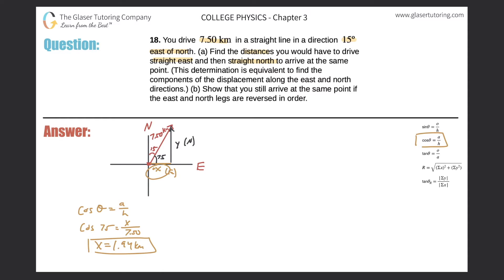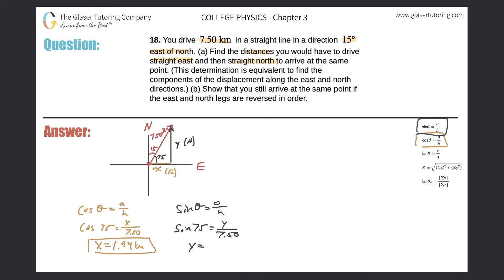Now let's solve for y. We know the hypotenuse, we know the angle, and we're looking for the opposite side — that's sine. Sine of 75 degrees equals y over 7.50. Taking sine of 75 times 7.5 on the calculator gives 7.24 kilometers for the y component.